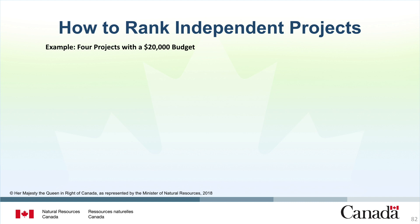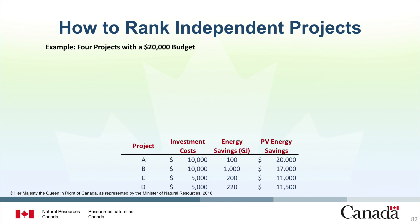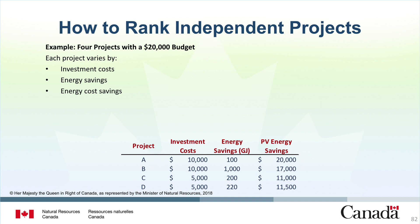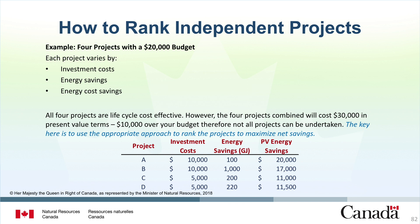Let's start off with a simple example that assumes a $20,000 budget. This slide shows four projects A, B, C, and D, each with varying investment costs, energy savings, and energy cost savings. For example, Project A has an investment cost of $10,000, energy savings of 100 gigajoules, and $20,000 of present value energy savings. Project D has an investment cost of $5,000, energy savings of 220 gigajoules, and $11,500 of present value energy savings. All four projects are lifecycle cost effective. However, the four projects combined will cost $30,000 — $10,000 over your budget — which means not all projects can be undertaken. The key is to use the appropriate approach to rank the projects to maximize net savings.